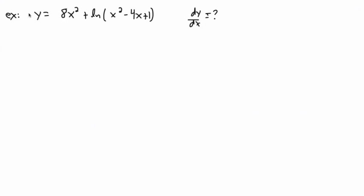Here we have the example 8x squared plus natural log of x squared minus 4x plus 1, and we want the derivative. This one has a function of x within a function, so that's a good example of when we want to use the chain rule.